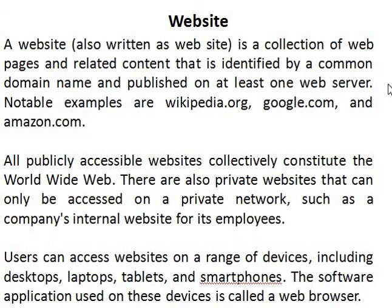Notable examples are wikipedia.org, google.com, and amazon.com. All publicly accessible websites collectively constitute the World Wide Web. There are also private websites that can only be accessed on a private network, such as a company's internal website for its employees — that is what I called intranet. Users can access websites on a range of devices including desktops, laptops, tablets, and smartphones. The software application used on these devices is called a web browser — Google Chrome, Firefox, Internet Explorer — those are the browsers.